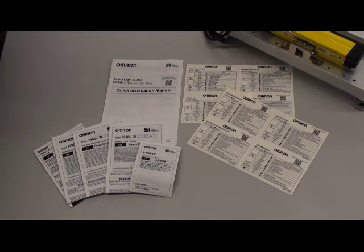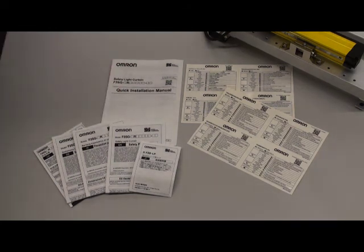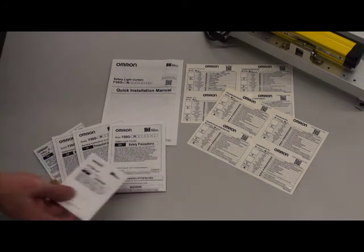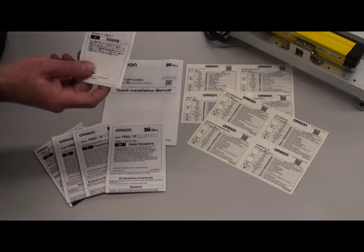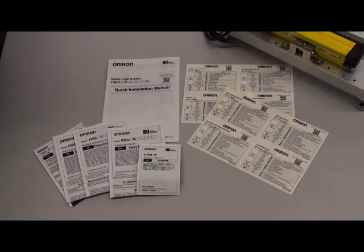Now I want to discuss some of the documentation that is inside the kit. We have a quick installation manual, which is here. And then we have four different languages for the safety precautions. And then we also have some documentation on the F39LP, which is that safety muting lamp.